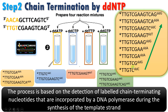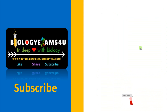Today we have fluorescently labeled ddNTPs, so whenever a ddNTP is incorporated we get a different color, allowing us to easily translate that into a sequence using computer programs. We have given a detailed video on Sanger's sequencing method — you can refer to that for more. Hope you understand the concept. Thank you so much for your support. You are with biologyexamsfor.com. Stay blessed.